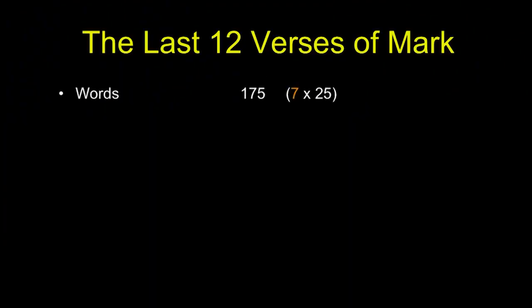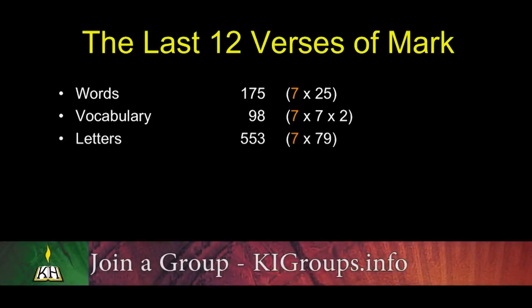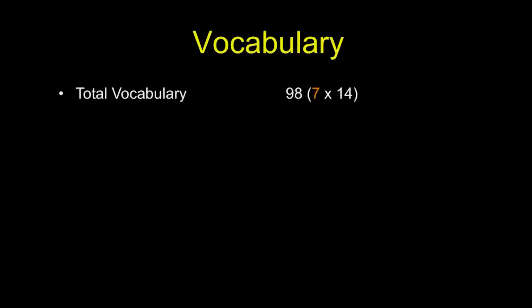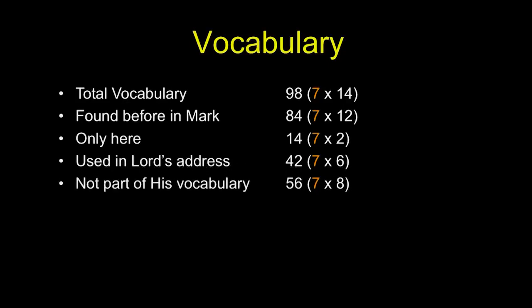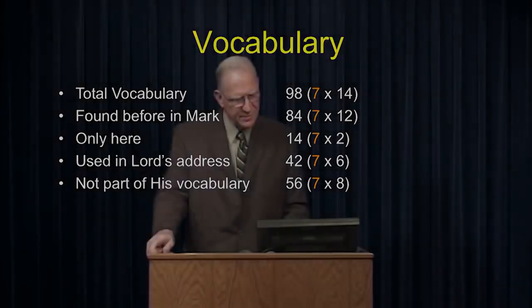Let me share some things that Panin discovered about these verses. The number of words in these 12 verses is 175 — that's a multiple of seven exactly. The vocabulary involved is 98 different words — a multiple of seven exactly. The number of letters in the 12 verses is 553 — a multiple of seven exactly. The vowels are a multiple of seven exactly, and the consonants obviously would be too. Of the total vocabulary of 98 words, 84 are found earlier in the book of Mark — a multiple of seven exactly. Fourteen of these words are found only here — a multiple of seven exactly. Forty-two of those words are used in the Lord's address. All multiples of seven exactly.